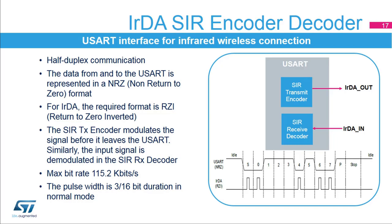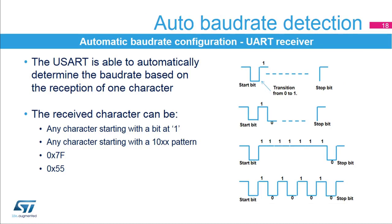The USART only supports bit rates up to 115.2 kilobits per second for the SIR ENDEC. In normal mode, the transmitted pulse width is specified as 3/16ths of a bit period. The USART receiver is able to detect and automatically configure the baud rate based on the reception of one character. The received character can be a character starting with a bit at 1, in which case the USART measures the duration of the start bit from falling edge to rising edge; any character starting with a 10XX pattern, measuring from falling edge to falling edge; a 0x7F character frame, where the baud rate is updated at the end of the start bit then at the end of bit 6; or a 0x55 character frame, updated at the end of the start bit, end of each bit, and end of bit 6.